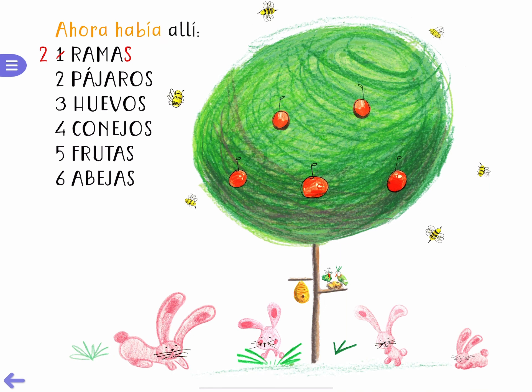Ahora había allí — now there was — dos ramas, two branches, dos pájaros, two birds, tres huevos, three eggs.